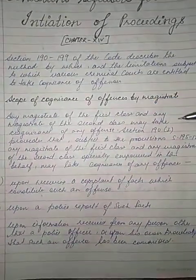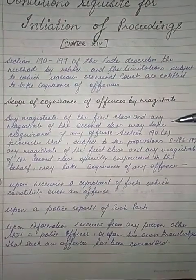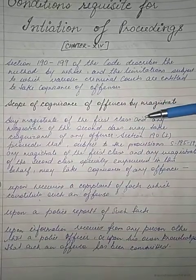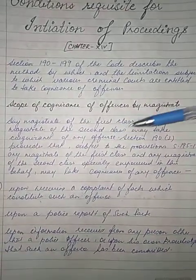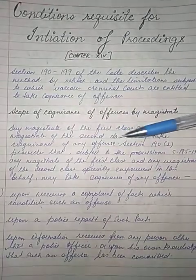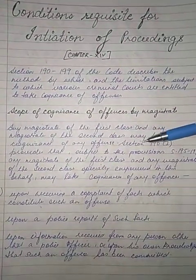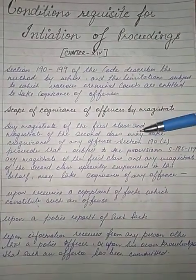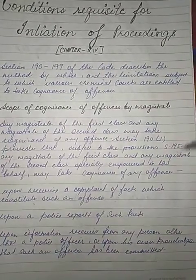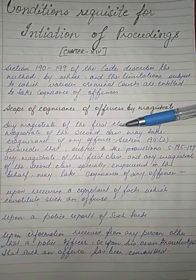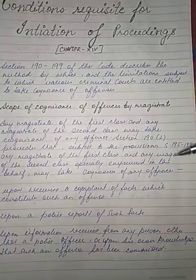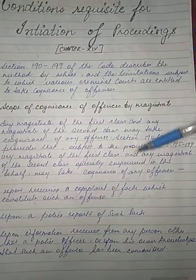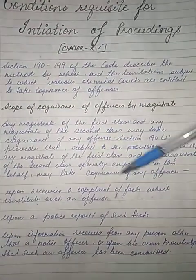Talking about the scope of cognizance of offenses by a magistrate: any magistrate of the first class and any magistrate of the second class may take cognizance of any offense. Section 190 clause 1 says, subject to the provisions of sections 195 to 199, any magistrate of the first class or second class who has been especially empowered in this behalf may take cognizance of any offense.